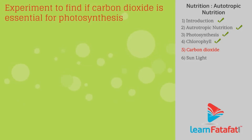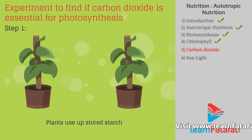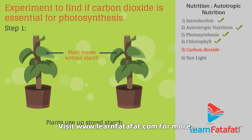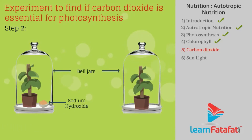Experiment to find if carbon dioxide is essential for photosynthesis: Take two healthy potted plants of the same height and place them in a dark room for three days so the plants use up their reserved starch. Place each plant on glass plates and place a watch glass containing sodium hydroxide near one plant. Cover the plants with separate bell jars and seal their bottoms with vaseline.